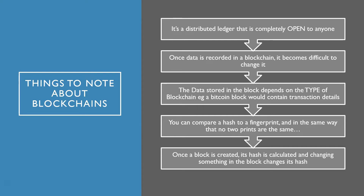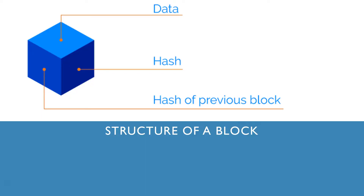Now with those key points in mind, let's take a further look into blockchains. Here we have the structure of a block, and blocks are basically made up of three main things: data, hash, and the hash of the previous block. Remember, it's a chain of blocks, so there's always going to be a previous block and a block that follows.